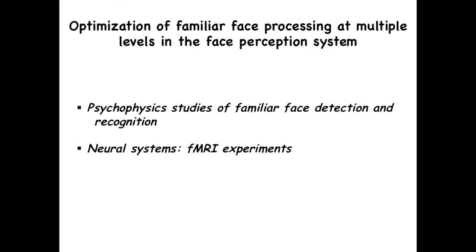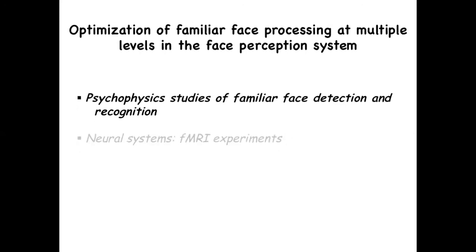We have two approaches to investigate this topic. First, psychophysics studies aim at understanding not only the difference between familiar face recognition and recognition of strangers, but these psychophysics studies can be extremely informative about the mechanisms subtending efficient recognition of familiar faces. Second, we have an approach related to understanding the neural system involved, and I'm going to present two fMRI experiments that try to address this question.